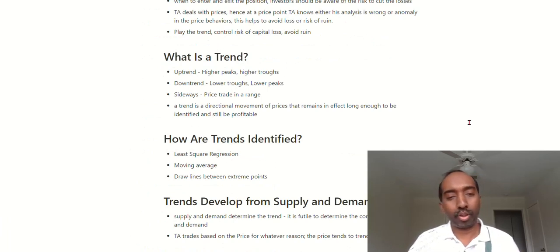How are trends identified? CMT material provides three options to identify trends. Option one: least square regression. Option two: moving average. Option three: draw lines between extreme points. Having said that, we'll shortly go into TradingView. TradingView is the platform we all are aware of, many of us aware of. For whatever platform you use for charting or reading the technical analysis, you can use that. But right now, I'm going to show you how to use these options in TradingView and identify the trend. On top of these three, there is another simple method. First, I'll explain that method, then we'll go over these three options of identifying trends.